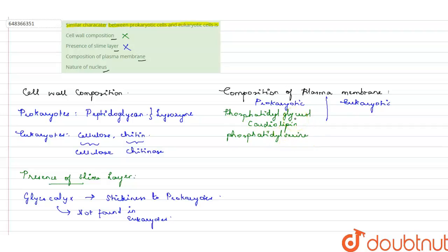And eukaryotic has phosphatidylcholine. Moreover, eukaryotic organisms have membrane-bound organelles. There are no membrane-bound organelles found in prokaryotes.